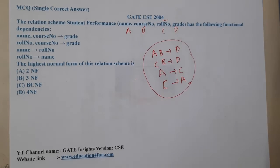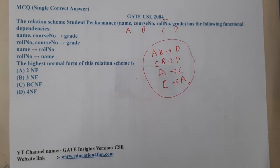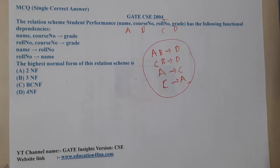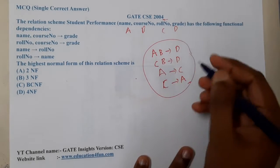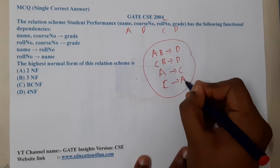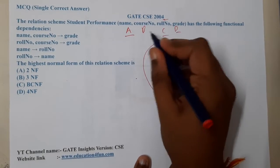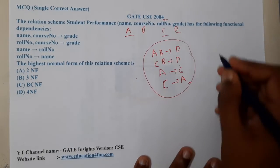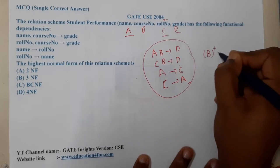They are asking what is the highest normal form this schema satisfies. First, we need to find the candidate keys. We have attributes A, B, C, D. On the right-hand side of the FDs we see A, C, and D appearing. So A, C, and D are derived attributes, leaving B as the only attribute not on any right-hand side.